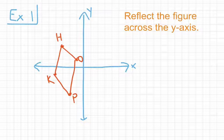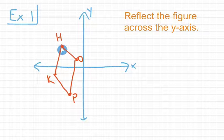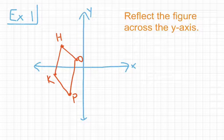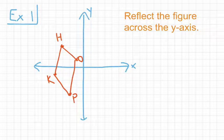Let's start with point H. We're simply counting the distance that point H is away from the y-axis. Counting from H to the y-axis, we get 3 units. So H' has to be on the same horizontal grid line but on the other side of the y-axis, also 3 units away. So H' is going to go right there.